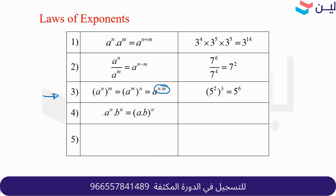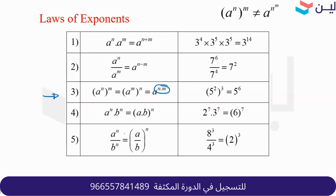If we have different bases but the same exponent, we can take the exponent as a common exponent. Similarly with division — different bases but same exponent, we can take it as a common exponent. One thing to pay attention to: whenever we have (a to the n) all to the m, it's multiplication — not power and then power. Although it's called power of a power, the operation is multiplication.